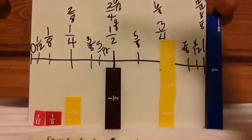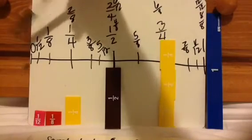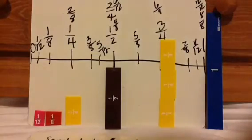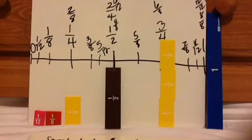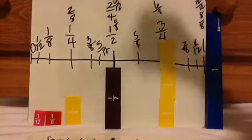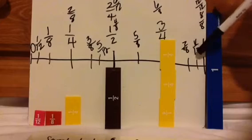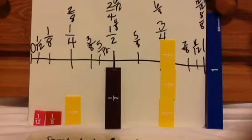The next one is 1 twelfth. 1 twelfth is right here — it's barely anything, it's basically zero. For this question it's safe to say it's pretty much zero. It's close to the benchmark of zero. And then the last one was 11 twelfths. 11 twelfths is close to 12 twelfths, which is 1 whole.